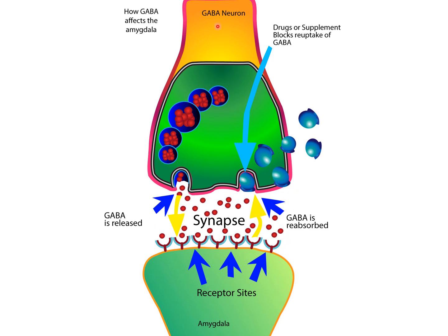In the GABA neuron, there are GABA neurotransmitters stored in vesicles. These vesicles release their contents into the synapse, so GABA is released from the vesicles into the synapse. The GABA then travels across the synapse and binds to the GABA receptors.